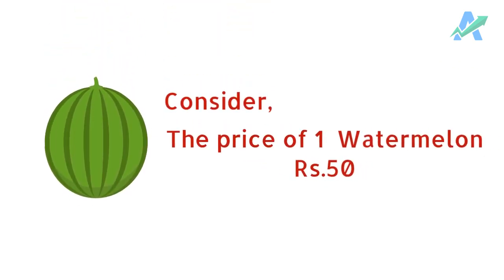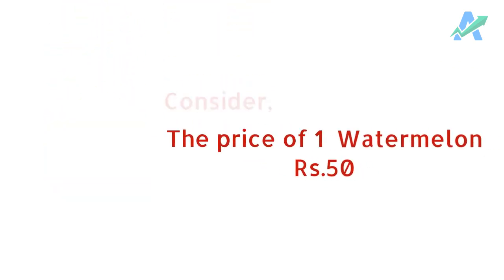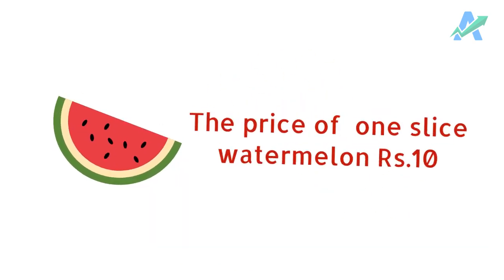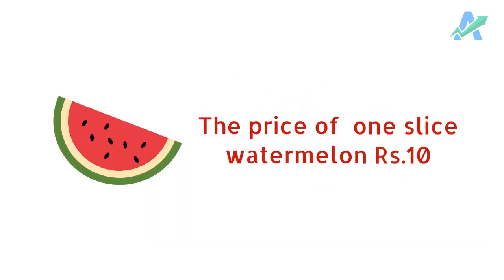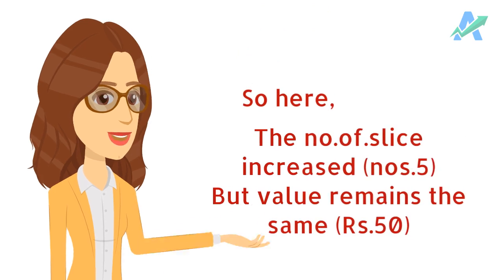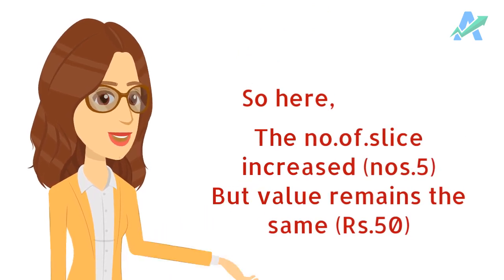Consider the price of one watermelon is rupees 50. If we divide it into five slices, the price will decrease. The price of one slice will be rupees 10. So here, the number of slices increased to five numbers, but value remains the same.